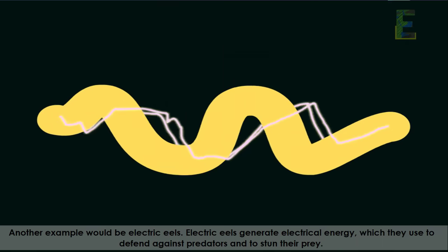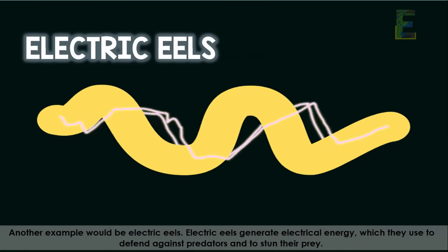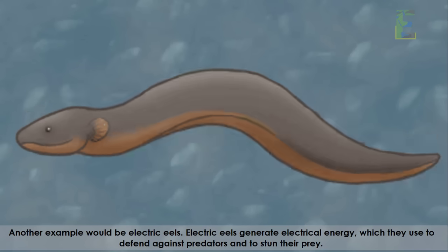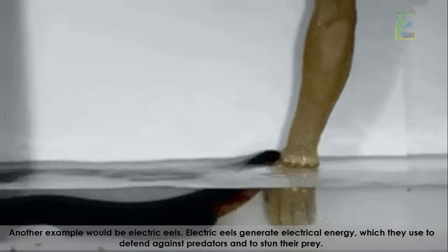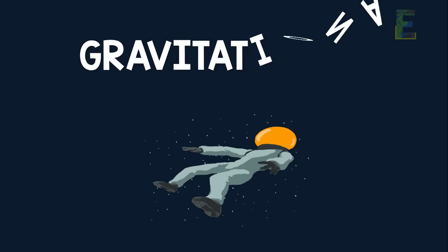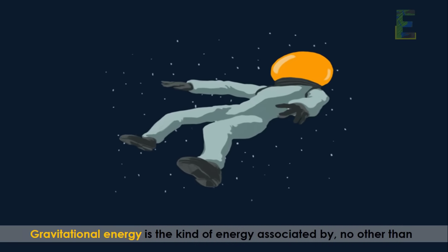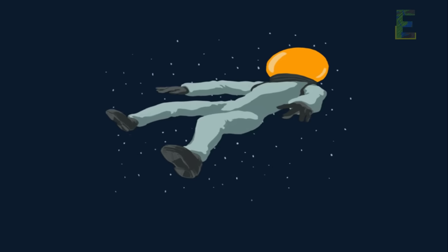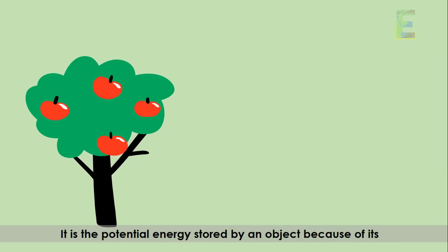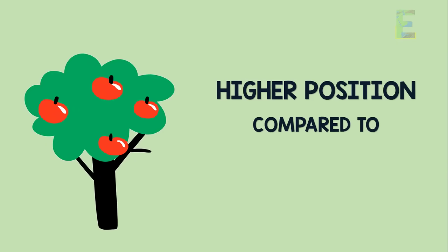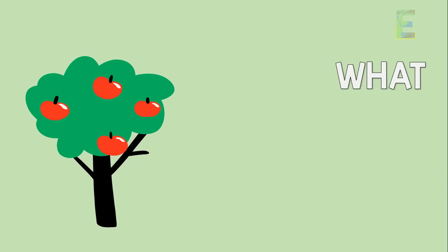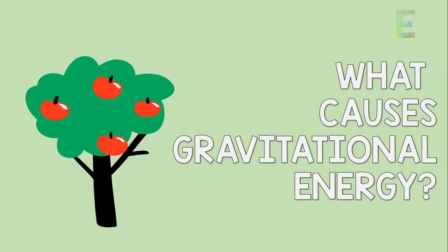Another example is electric eels, which generate electrical energy to defend against predators and stun their prey. Next, we have gravitational energy. Gravitational energy is the kind of energy associated with gravity. It is the potential energy stored by an object because of its higher position compared to a lower position.